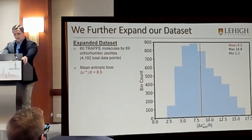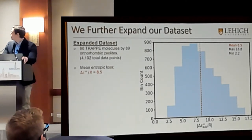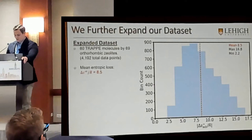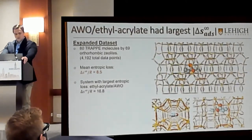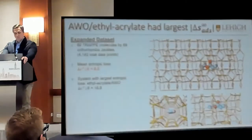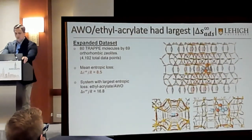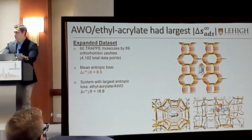Here is a histogram of our entropic losses. On the x-axis we have all the delta S values, and on the y-axis we have the number of systems that exhibited those values. Our mean entropy loss was about 8.5R, with R being the universal gas constant. The largest entropic loss we found was for a zeolite known as 8WO, which can be thought of as mordenite with one-dimensional channels but with a smaller pore size — specifically, its diameter was about 1.5 angstroms smaller.